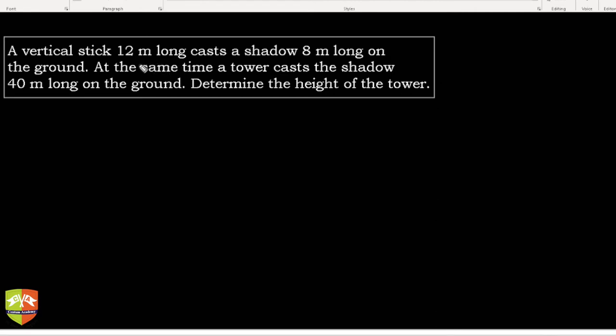casts a shadow 8 meters long on the ground. At the same time, a tower casts a shadow 40 meters long on the ground. Determine the height of the tower. So let's